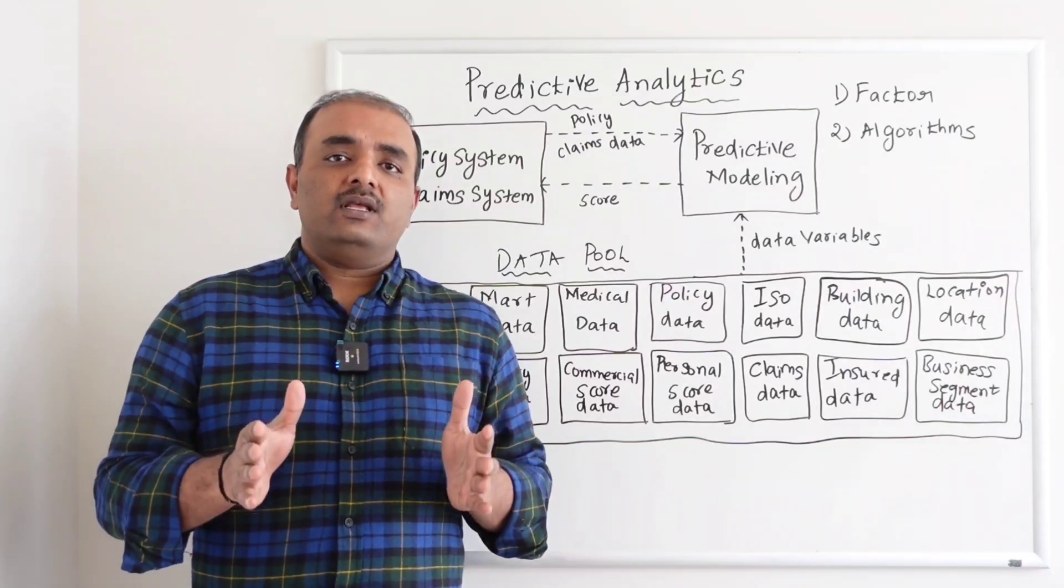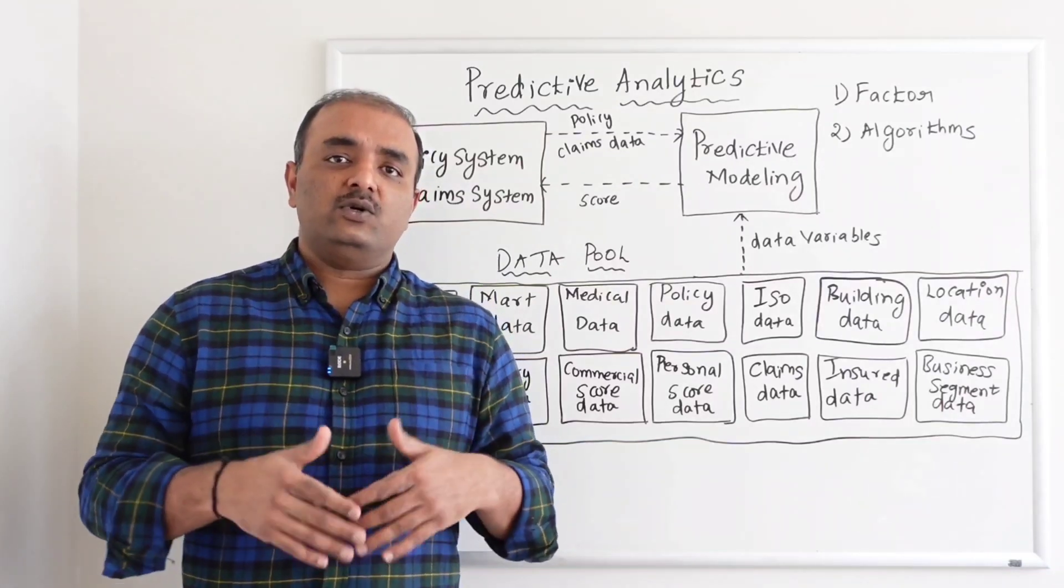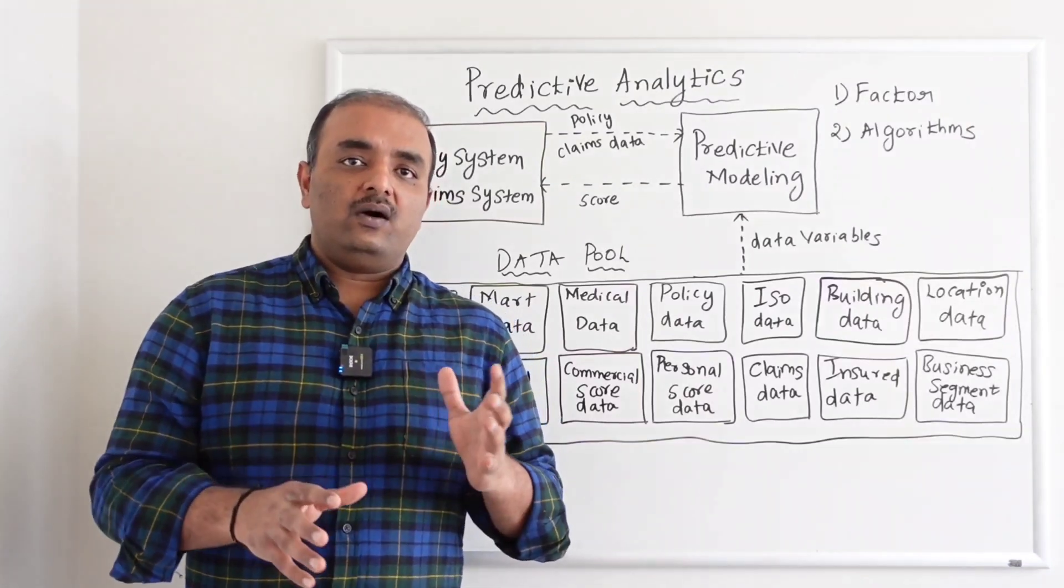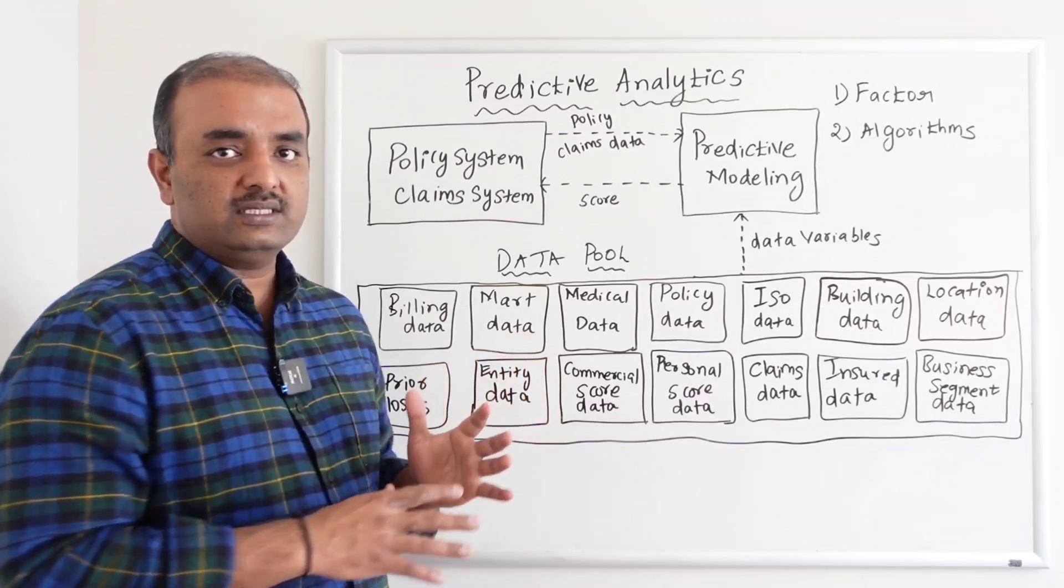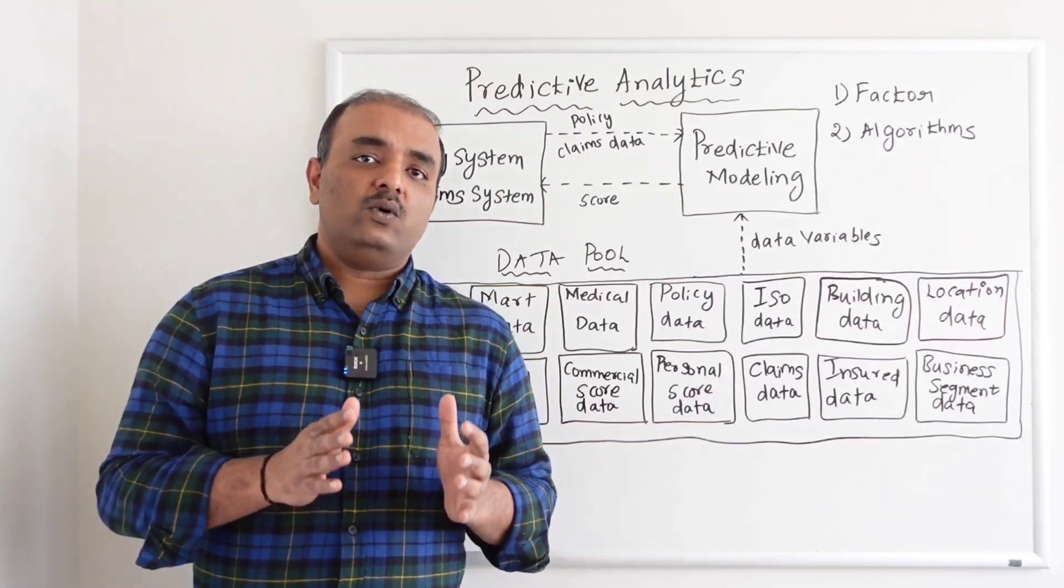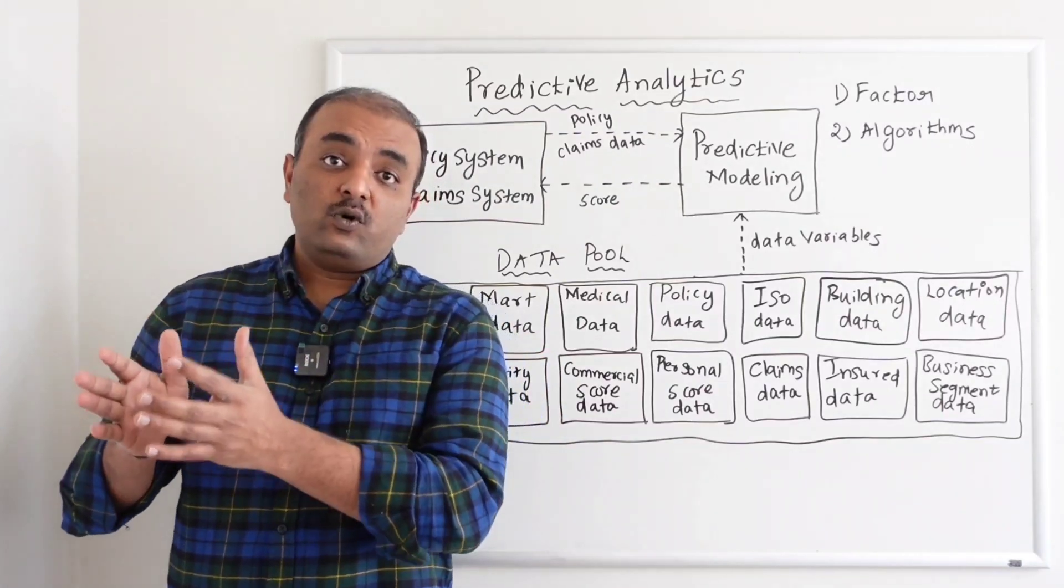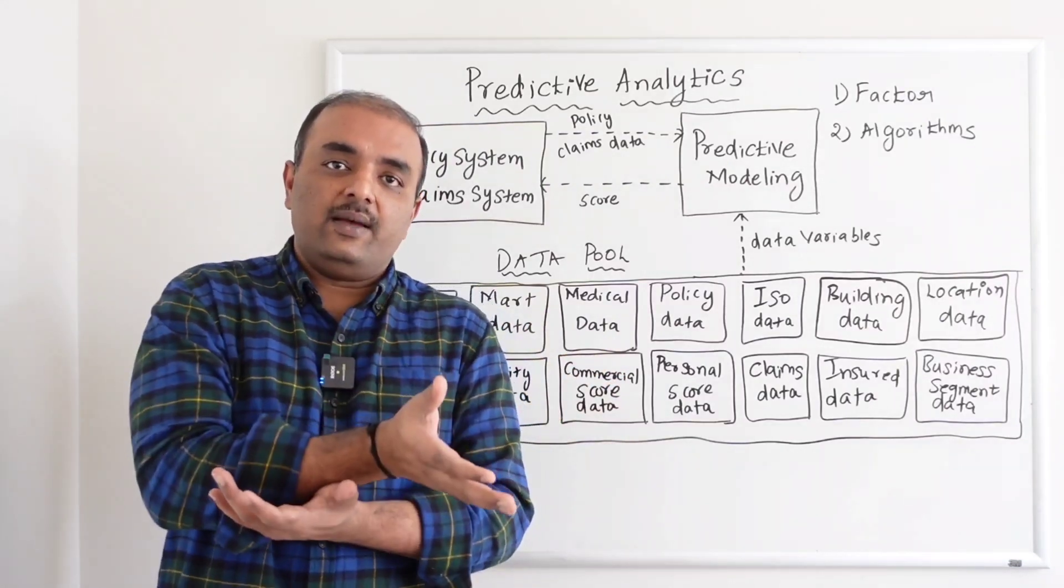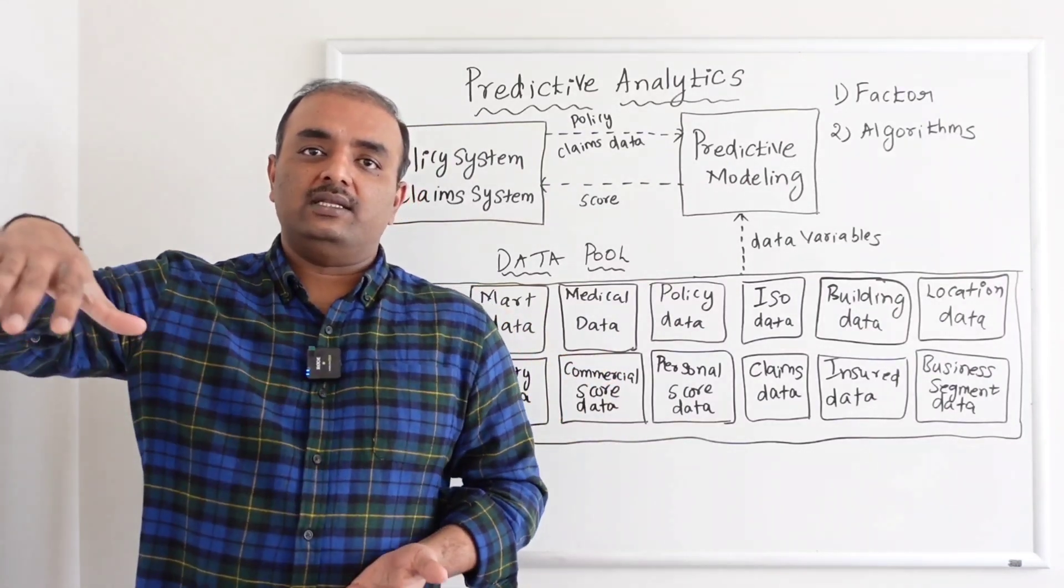At one point in time, if the business - when I say business, actuaries. Actuaries are nothing but the team who does this reporting, who does this scoring process. If they think that this scoring for challenger is more productive than the champion, they can always use this challenger as the champion and then move this champion to challenger.